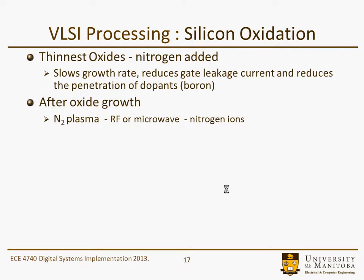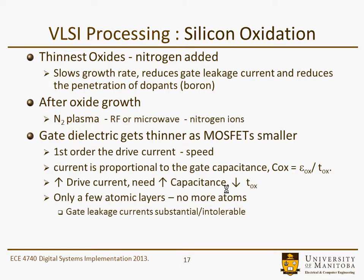For the thinnest oxides, nitrogen is added, which basically slows the growth rate for better control, and has other desirable properties such as reducing leakage current and reducing penetration of other dopants that may be present. After the oxide is grown, it is subject to a nitrogen plasma generated by RF or microwave, which releases nitrogen ions that react on the surface.